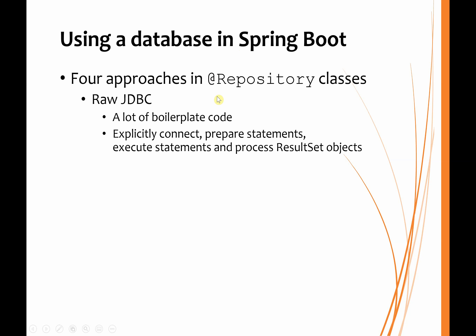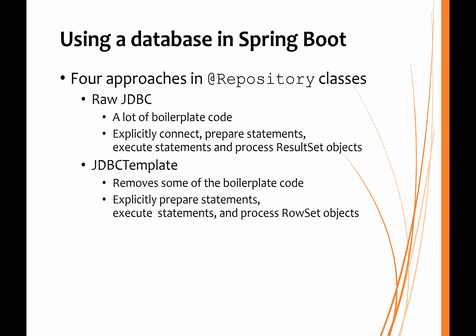In our first attempt, we used raw JDBC code to explicitly connect to the database, prepare statements, execute those statements, and process the results that come back — typically as result set objects following a query. That required a lot of boilerplate code. The next approach was to use the JDBC Template class, which removes some of the boilerplate code — for example, we no longer have to connect explicitly, as that's done by the JDBC Template. But we still have to explicitly prepare the statements and execute them, and we process row set objects instead of result set objects. Essentially, the only boilerplate code removed is the connection and closing of connections to the database.